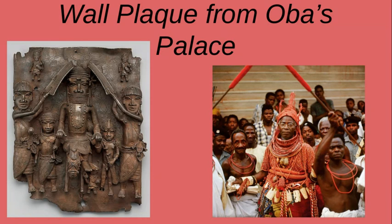So again, that is the wall plaque from the Oba's Palace — a brass art piece made probably from the 1500s to about the 1600s, from the Benin Empire, modern-day Nigeria. The Oba means king or ruler.